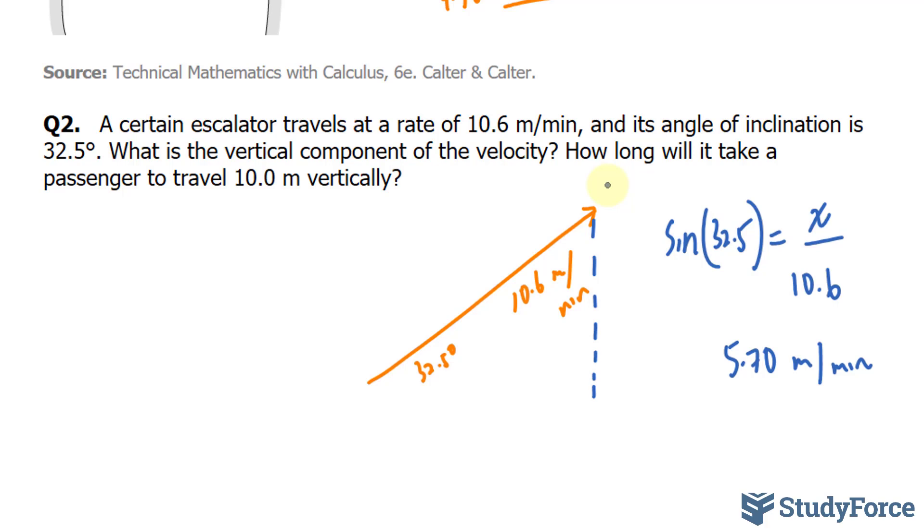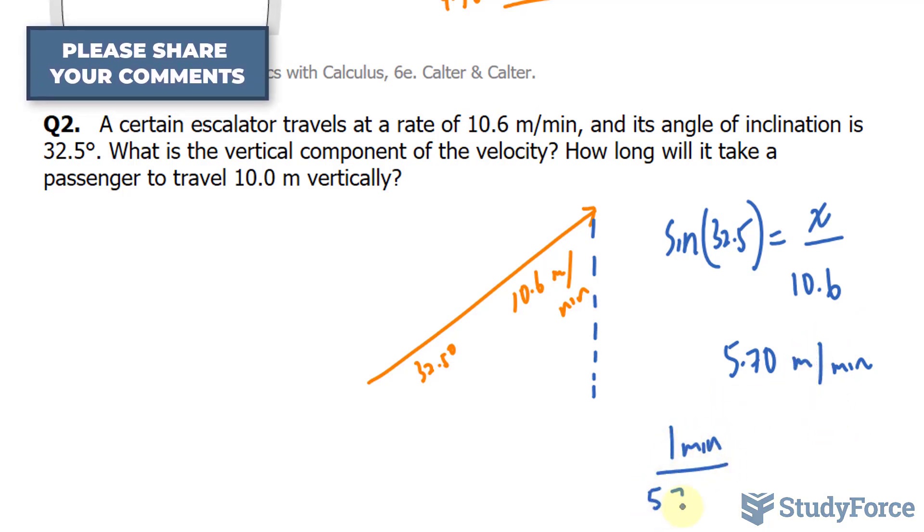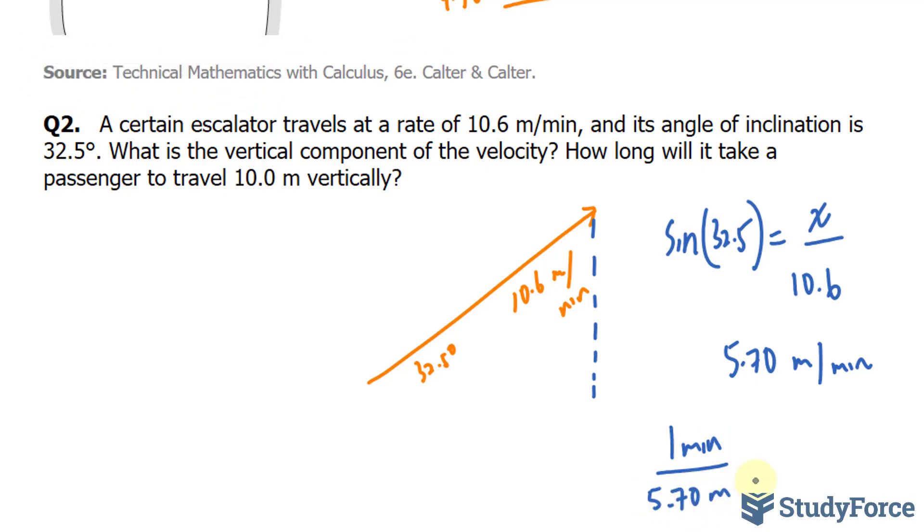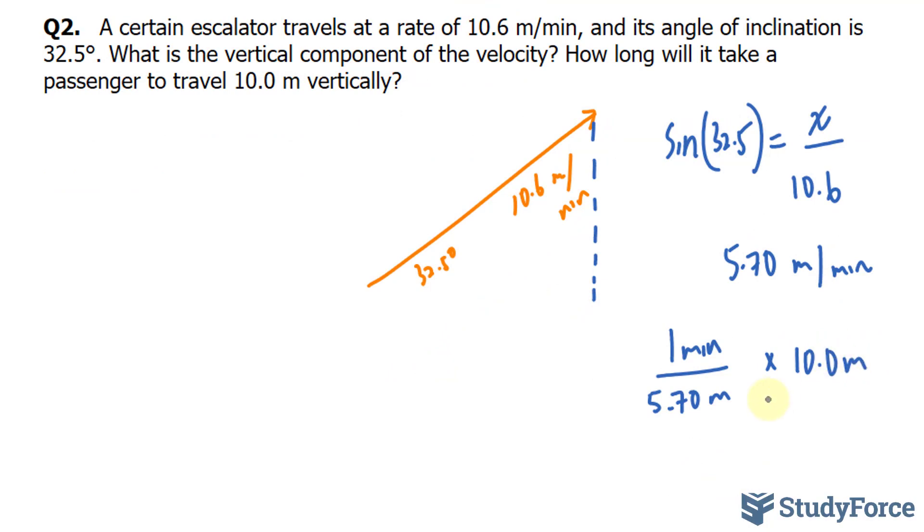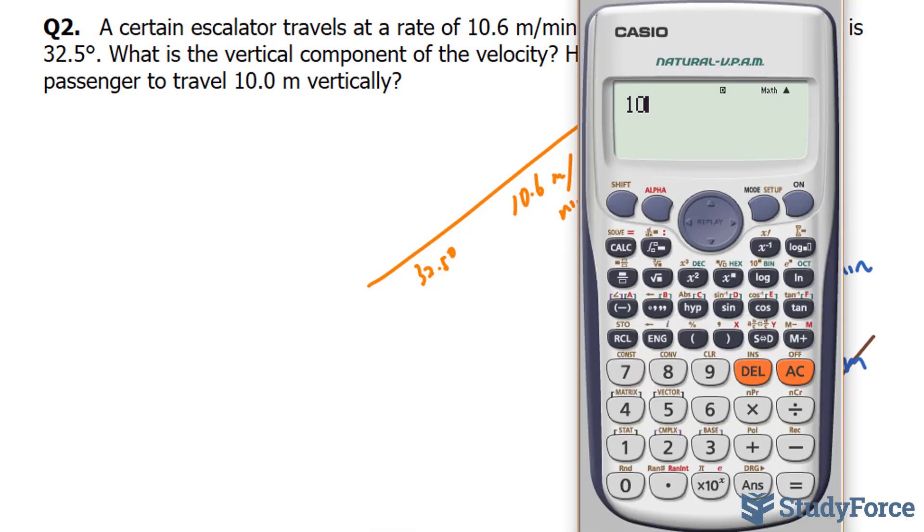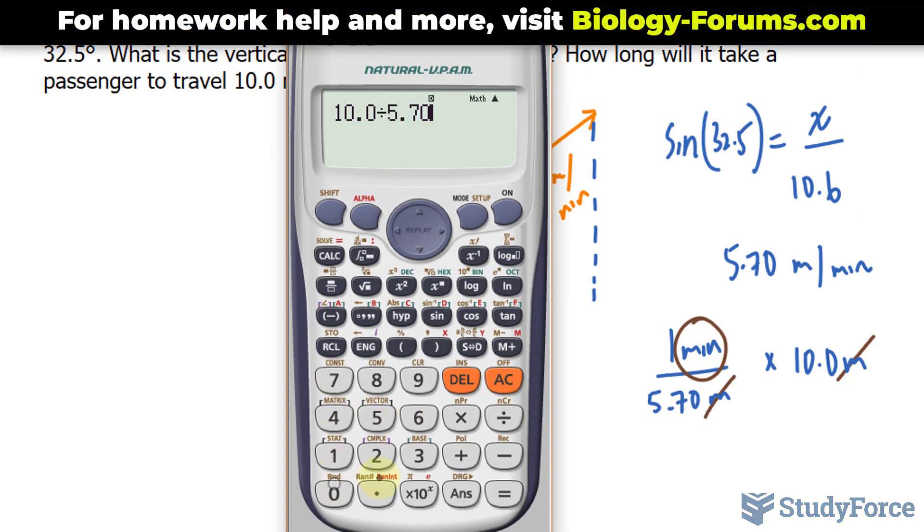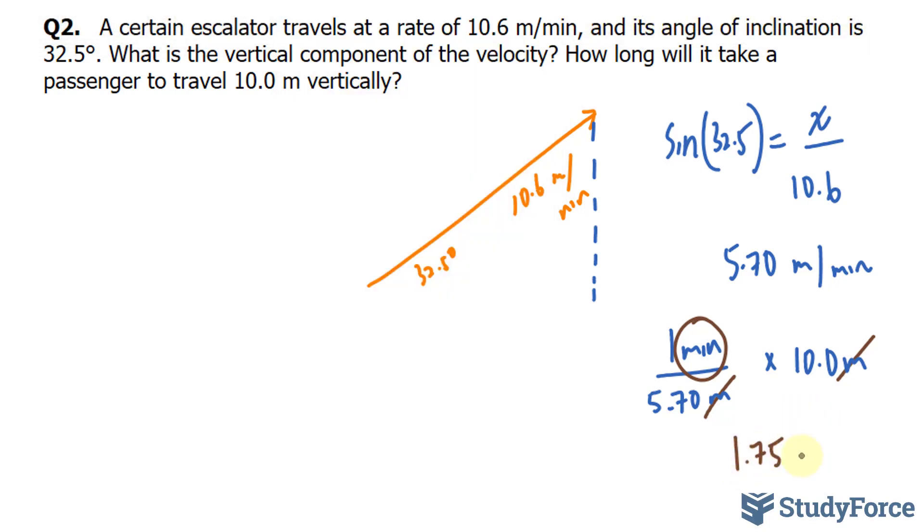I'll take this speed. And a speed is a rate, so you can use it as a conversion factor. But rather than having 5.70 meters per minute with the minutes at the bottom and the meters at the top, I'll put 1 minute at the top and 5.70 meters at the bottom. Then I'll multiply this by 10.0 meters. The reason I flipped this is because now this unit and this unit will cancel out. We'll be left with minutes, which is what we're looking for. So we have 10.0 divided by 5.70 and we end up with 1.75. So it takes 1.75 minutes to reach 10 meters vertically.